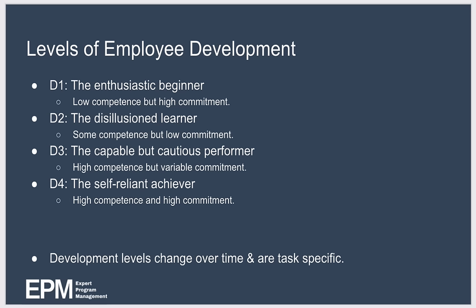Next we have D3, the capable but cautious performer. Here your subordinate has high competence but variable commitment. They are more capable of performing the task than at D2, but for whatever reason they're unwilling or lack the confidence to perform. Finally, D4 is the self-reliant achiever. Here your subordinate has high competence and high commitment — they're confident in their ability to perform the task, committed, and take responsibility for it.